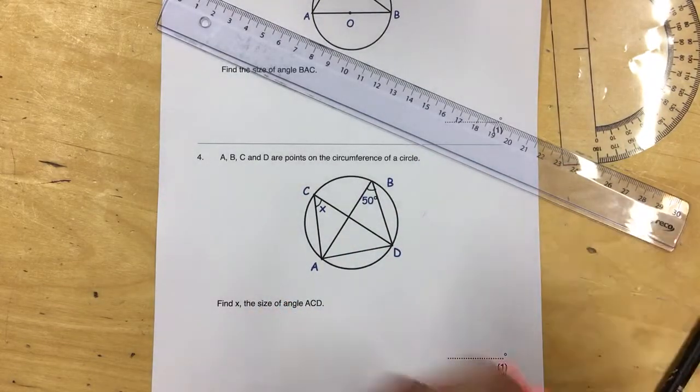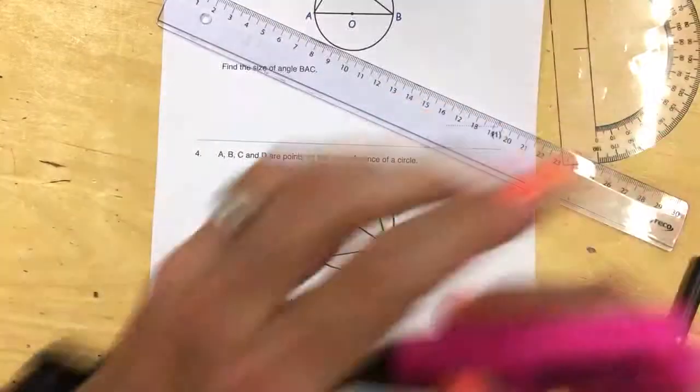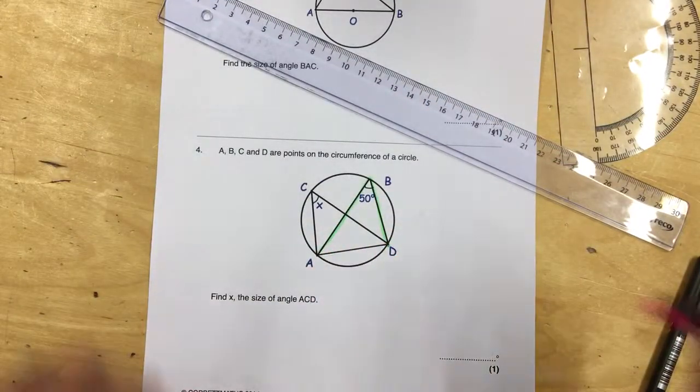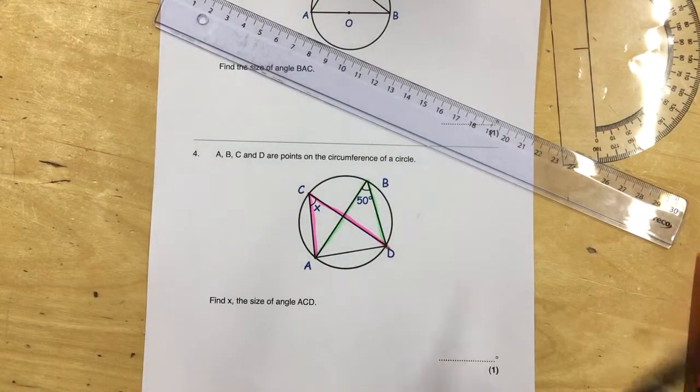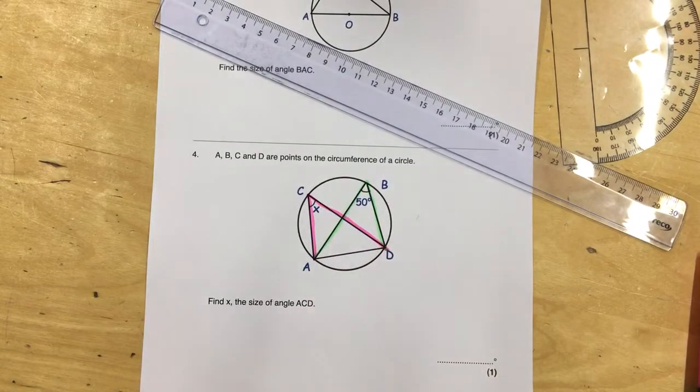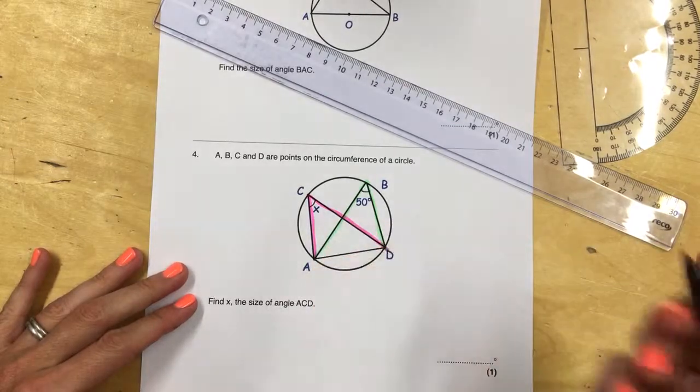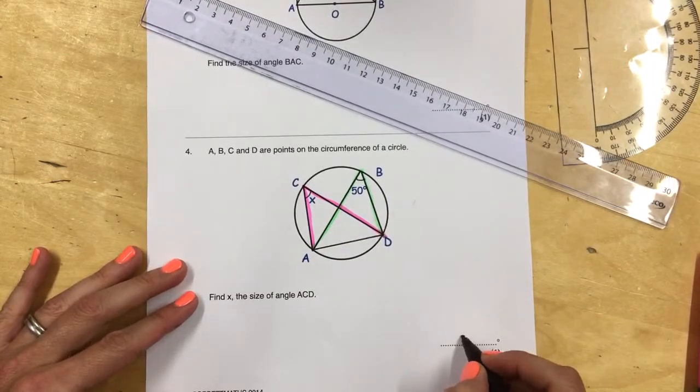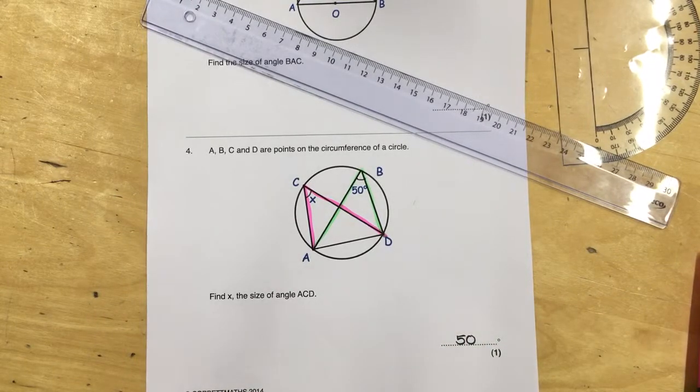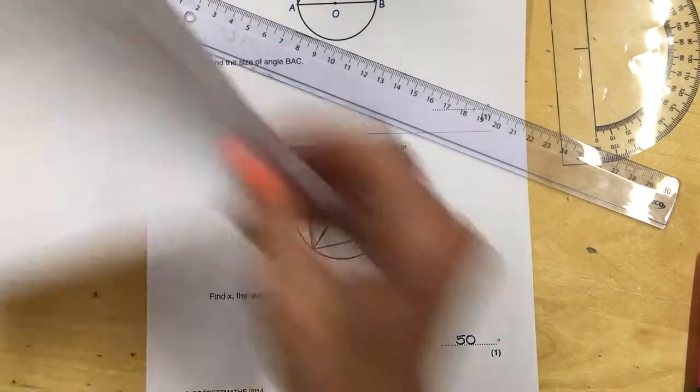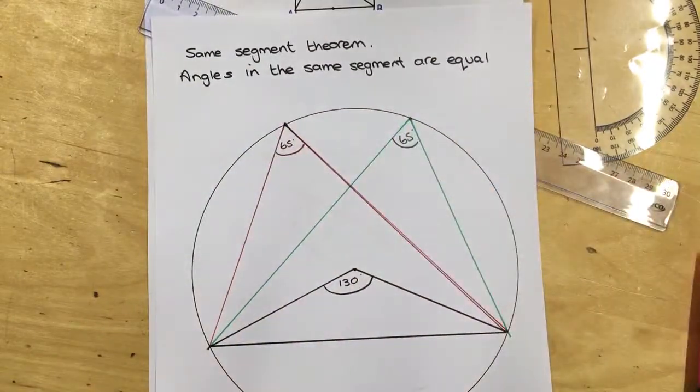So let's get the highlighter. So this is one of them coming out from this same section. This is the other one. Which must mean that this angle and this angle, angles in the same segment are equal. So that must mean that X is very simply 50 degrees. And if they ask you in a question why, you would say because angles in the same segment are equal.